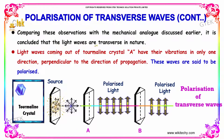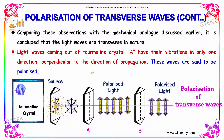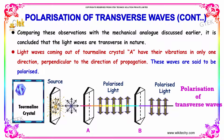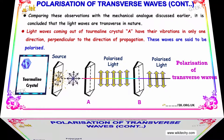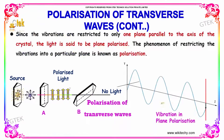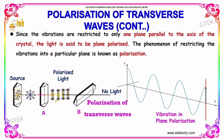Comparing this observation with the mechanical analogy discussed earlier, it is concluded that the light waves are transverse in nature. The light waves coming out of tourmaline crystal A have their vibrations in only one direction perpendicular to the direction of propagation. These waves are said to be polarized. Since the vibrations are restricted to only one plane containing the axis of the crystal, the light is said to be plane polarized. The phenomenon of restricting the vibration to a particular plane is known as polarization.